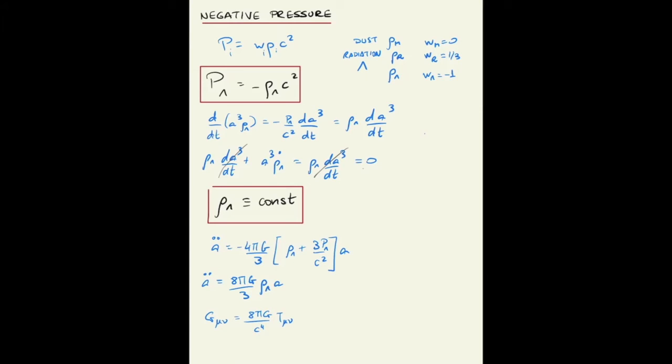When Einstein used this equation to derive the Friedman equation, found that the universe would be contracting or expanding and to make the universe static, Einstein introduced the cosmological constant.